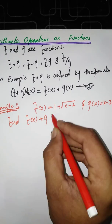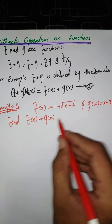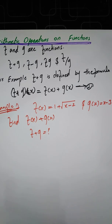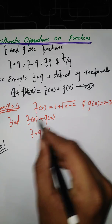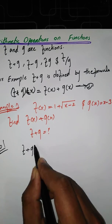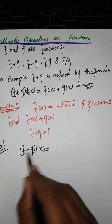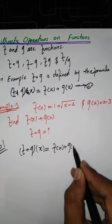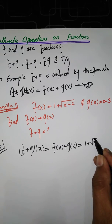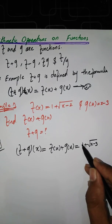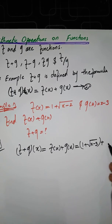To find (F+G)(x), whenever we have to find F plus G, we just add the functions: left-hand side with left-hand side and right-hand side with right-hand side. So the solution is: (F+G)(x) equals F of x plus G of x, which equals 1 plus square root of (x minus 2) plus (x minus 3).